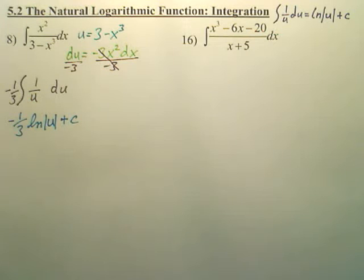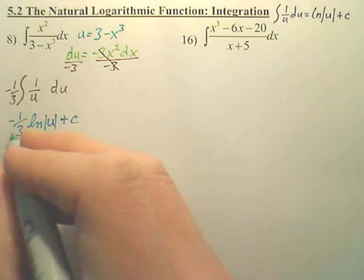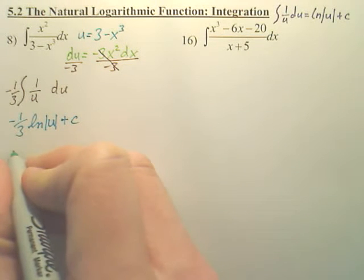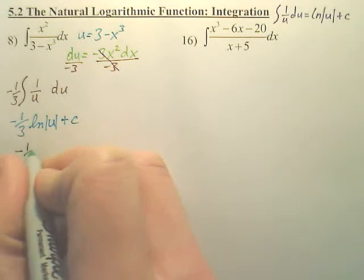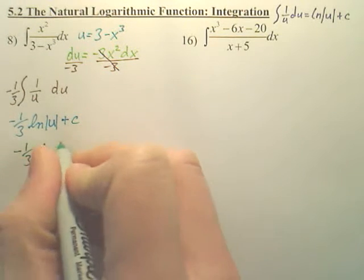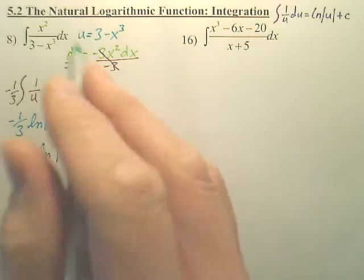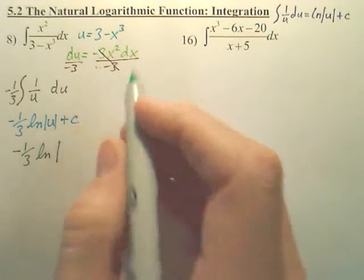Now, that would be not done yet, because you now have negative one-third, ln. What's u? u is 3 minus x cubed.